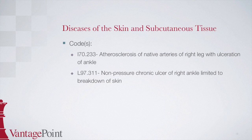The first code is I70.233, atherosclerosis of native arteries of right leg with ulceration of ankle. If you looked up atherosclerosis in the alphabetic index, there is a note which states 'see also arteriosclerosis,' which is necessary because there are no options for the extremities. After finding arteriosclerosis, look for extremities, then leg, which is located almost at the end of all the arteriosclerosis of the extremity codes. You need to pay close attention to make sure you're not still under bypass graft. Indented under leg is the word right, followed by with, then indented below is ulceration, and then ankle, which points to I70.233, which you would then confirm in the tabular list.